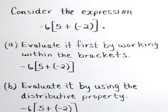Consider the expression -6 times the quantity 5 plus (-2). In part A, let's evaluate it first by working within the brackets.